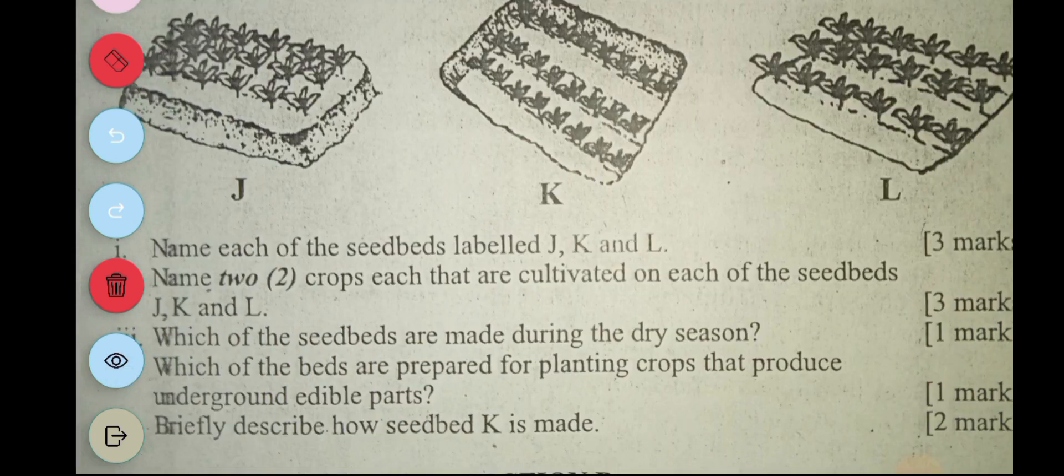The next question says: which of the seed beds are made during the dry season? So during the dry season, the sunken bed is made.